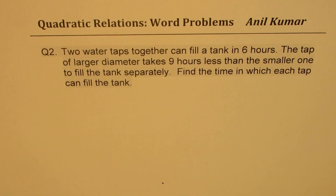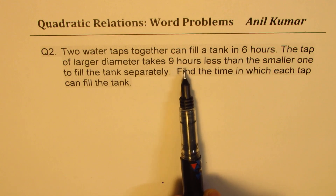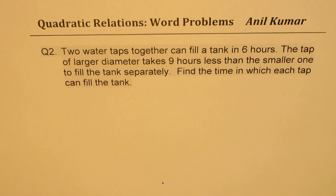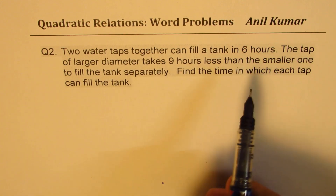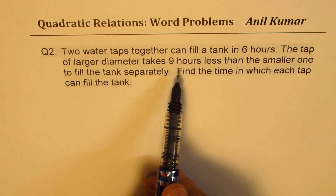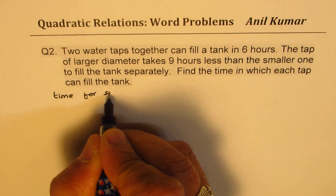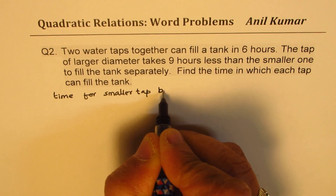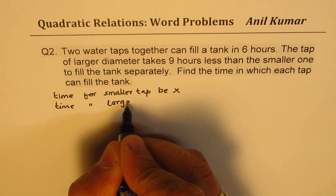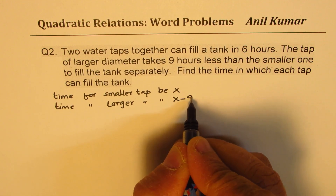Let's move on to question number two. Two water taps together can fill a tank in 6 hours. The tap of larger diameter takes 9 hours less than the smaller one to fill the tank separately. Find the time in which each tap can fill the tank. Let X be the time in hours for the smaller tap; then the larger tap takes X minus 9 hours.